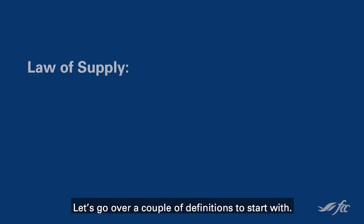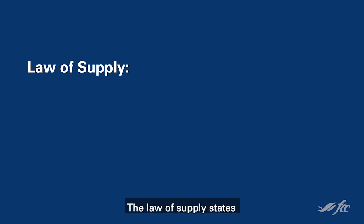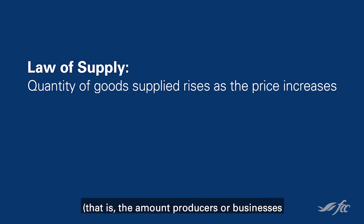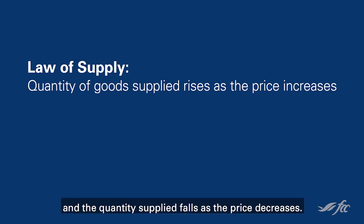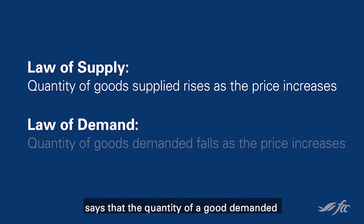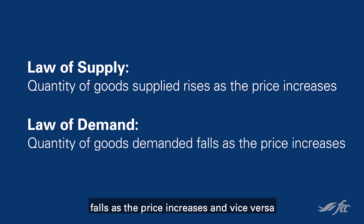Let's go over a couple of definitions to start with. The law of supply states that the quantity of a good supplied — that is, the amount producers or businesses offer for sale — rises as the market price increases, and falls as the price decreases. Conversely, the law of demand says that the quantity of a good demanded falls as the price increases, and vice versa.